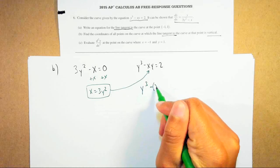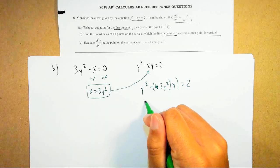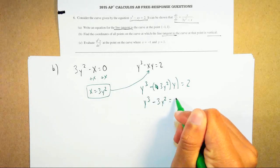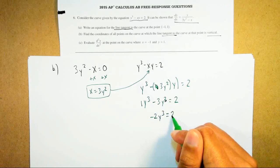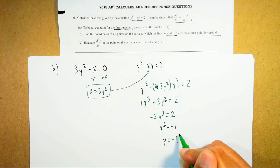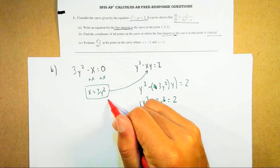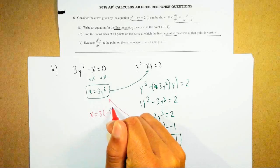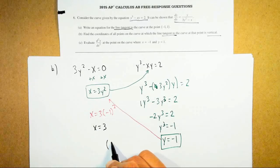Plugging x equals 3y squared into y cubed minus xy equals 2 gives: y cubed minus (3y squared)(y) equals 2, which simplifies to y cubed minus 3y cubed equals 2, so negative 2y cubed equals 2. Dividing by negative 2 gives y cubed equals negative 1. Taking the cube root gives y equals negative 1. That is my y coordinate. Now, plugging y equals negative 1 back into x equals 3y squared gives x equals 3 times (negative 1) squared, so x equals 3. The coordinate where the tangent line is vertical is (3, negative 1).